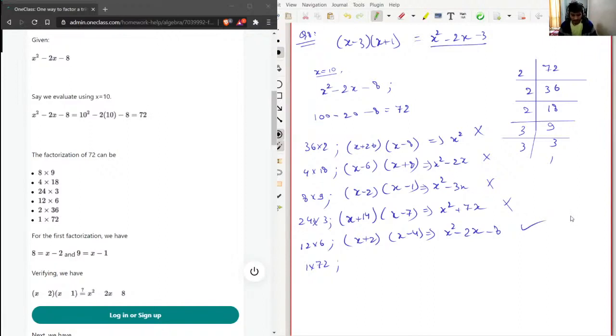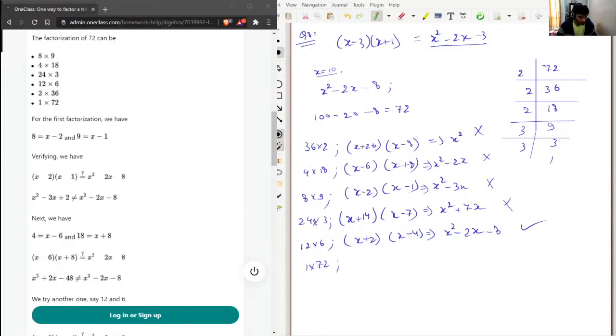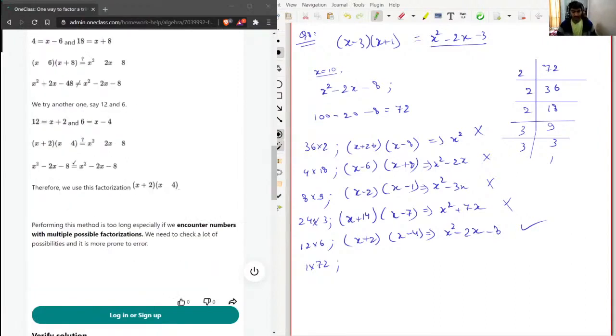So same solution is given here also, x plus 2, x minus 4. Now the thing is that this procedure is very much lengthy. Like we already saw that if we miss some factors and, touch wood this shouldn't happen, but if the factor which we missed was the solution of this whole question, then we would just waste our time.